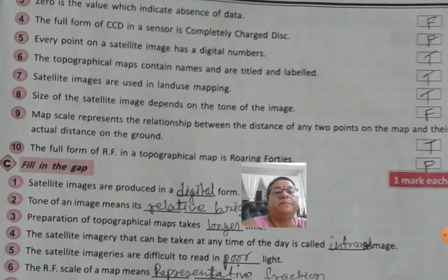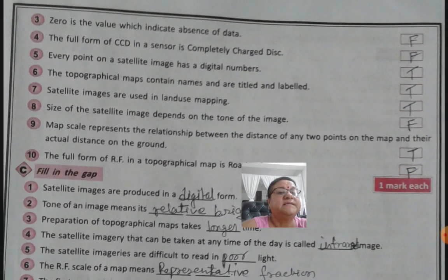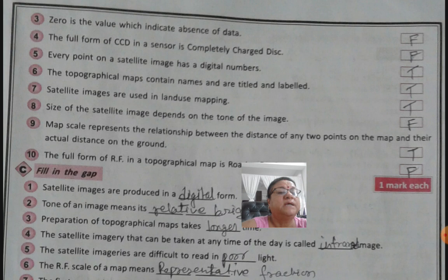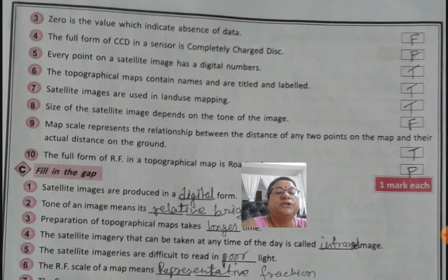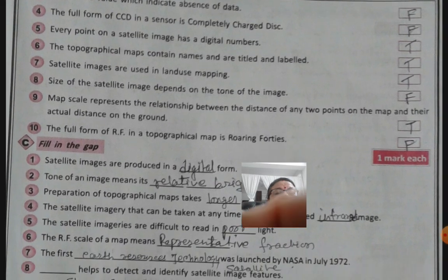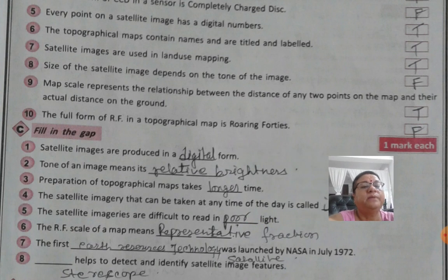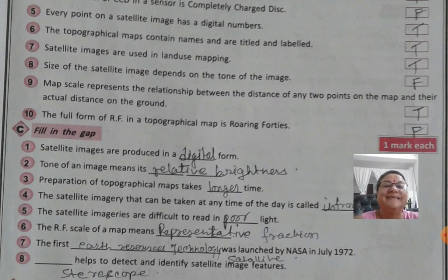The map scale represents the relationship between the distance of any two point on the ground and their actual distance on the ground is true. Then the full form of RF in a topographical map is roaring forties. That is false.